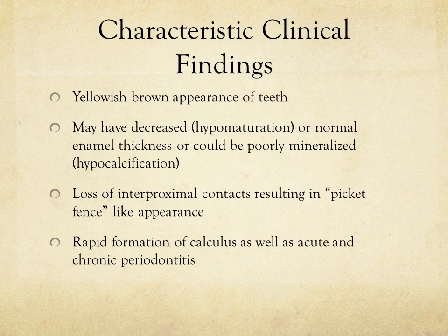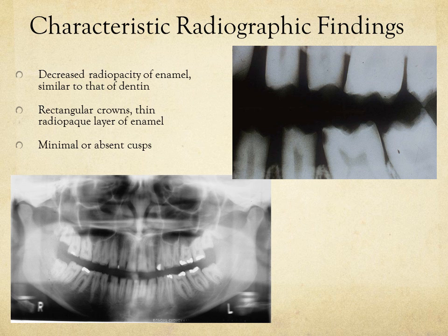For the characteristic clinical findings, you will see a yellowish-brown appearance of the teeth. Enamel may be decreased, hypomature, or normal in thickness, or poorly mineralized as in hypocalcification. There will be a loss of interproximal contacts resulting in a picket-fence appearance, and there may be rapid formation of calculus as well as acute and chronic periodontitis.